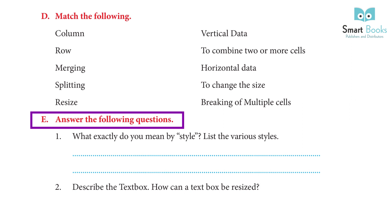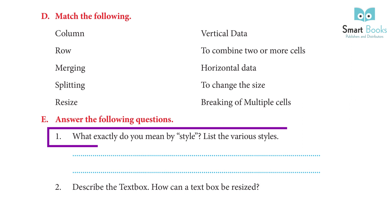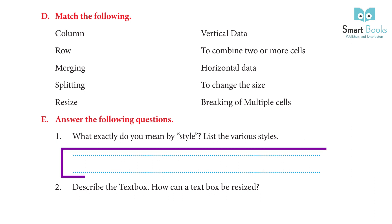Answer the following questions. 1. What do you mean by style? List the various styles. Answer: Style means a unique technique. Microsoft Word has tools to modify documents and give them a more attractive appearance using various shapes, images, text, etc. Character and paragraph styles are available in MS Word.